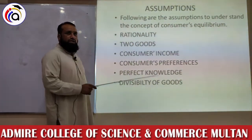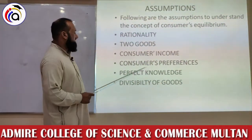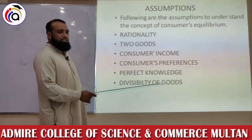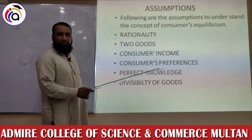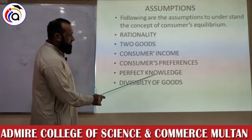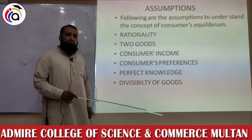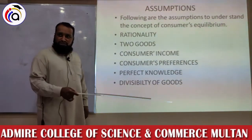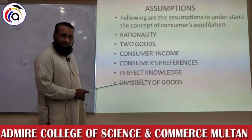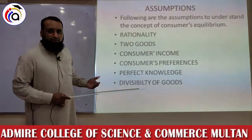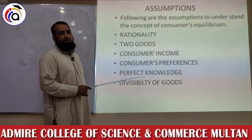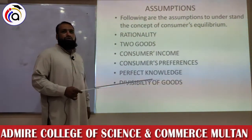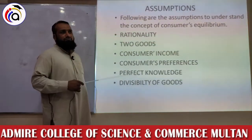Income is held constant because if income changes, the consumer's preferences also change. Consumer preferences remain constant — his likes, dislikes, and taste all remain the same with no change. Perfect knowledge: the consumer has perfect knowledge about the market — which products are available, at what rate, and where they are sold — so that no seller can deceive the consumer. Divisibility of goods: goods can be divided into smaller parts and can be purchased in quantities like 1 kg, 2 kg, or 10 kg.